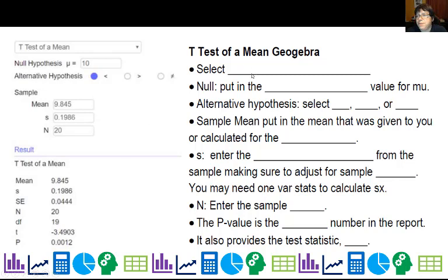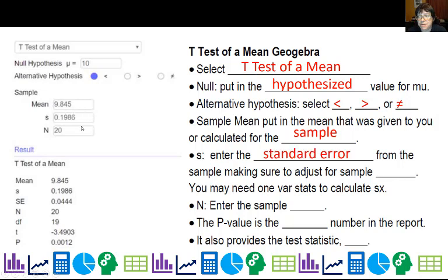Okay, so if you're doing the geogebra with the link that I'm going to give you, you select t-test of a mean, so that's the dropdown there. For the null, you put in what your hypothesized mean is, which is the 10. Then we're saying we're concerned that it's less than 10 ounces, so I actually click on this button right here. For the sample mean, just put in the mean from the sample, which in our case was 9.845, and the standard error from the sample as well, making sure to adjust for sample size. All right, and you may need one-var stats to calculate that.